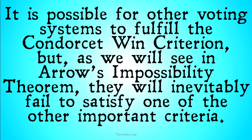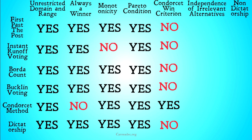It is possible for other voting systems to fulfill the Condorcet Win Criterion. One of the voting systems mentioned in the last video — sequential pairwise voting — will, but it clearly didn't fulfill the Pareto condition, so it has some problems as well. But as we'll see in Arrow's Impossibility Theorem, there will inevitably be one of the important criteria that whatever voting system we pick will fail to satisfy. So we have a lot more red on the board here, with only the Condorcet method passing the Condorcet Win Criterion, and unfortunately it's not going to get better.